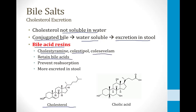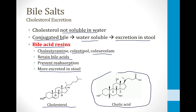Bile acid resins retain bile acids in the stool and prevent their resorption, so more bile acids go out in the stool. When more bile acids like cholic acid are excreted in the stool, more cholesterol is eliminated from the body. These drugs have largely been replaced by statins and other cholesterol drugs; they have nasty side effects like bloating and diarrhea, but a long time ago they were the only drugs available and were used more often. I discuss these in more detail in the modules on lipid drugs.